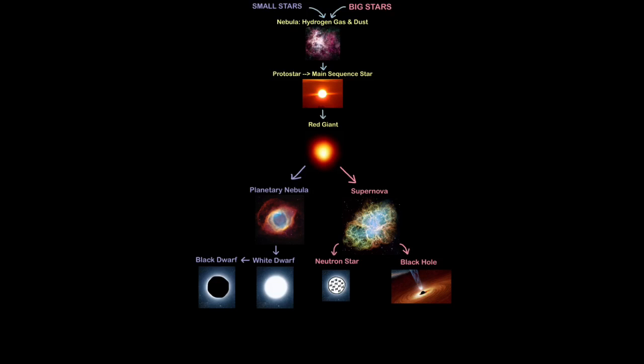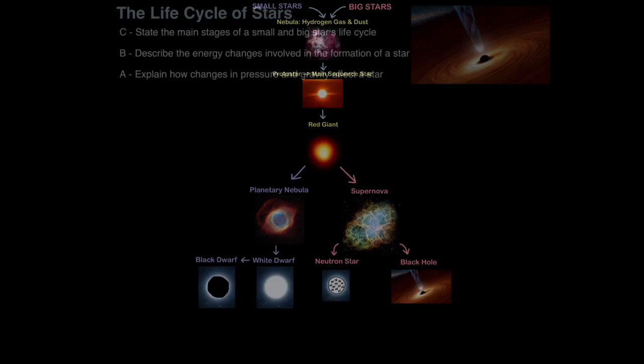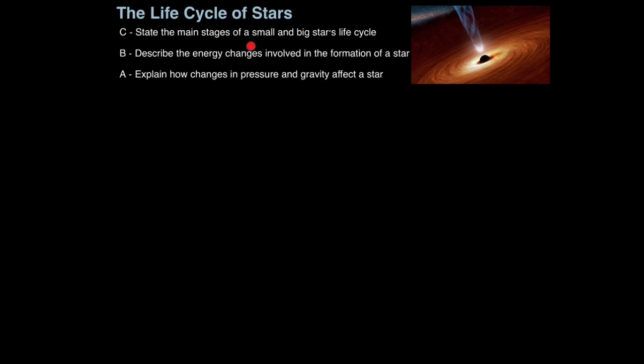In an exam this could be just a tick box, multiple choice question just to identify key stages, or it could be a six marker: describe the main stages of a small star's life cycle or big star's life cycle and you literally just state the stages. It's as easy as that. This requires no significant amount of intelligence, just a fairly good memory. That is how you state the main stages of a small and big star's life cycle.